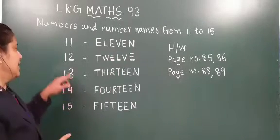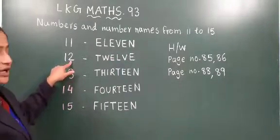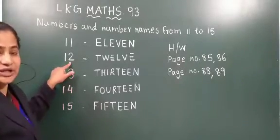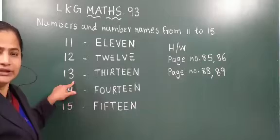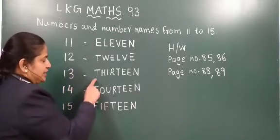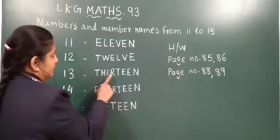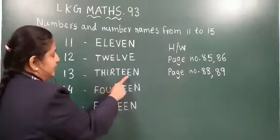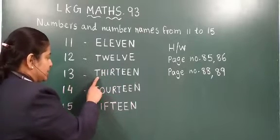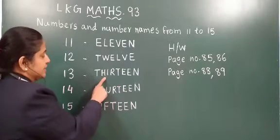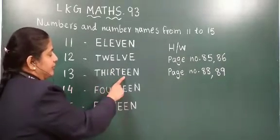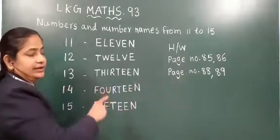Now next — after twelve which number will come? One three — thirteen. Twelve ke baad konsa number ae ga? One three — thirteen. Now what is the spelling? T, H, I, R, T, E, E, N. Once more: T, H, I, R, T, E, E, N. You got it — eleven, twelve, thirteen.